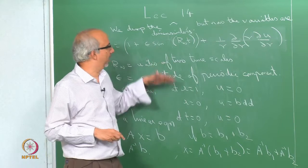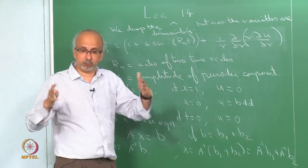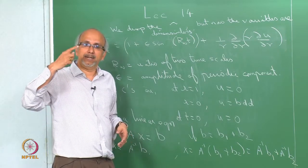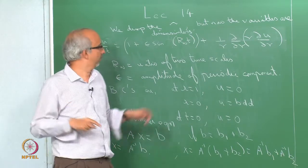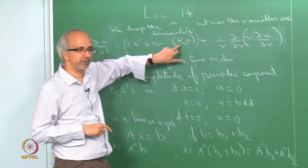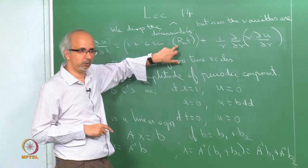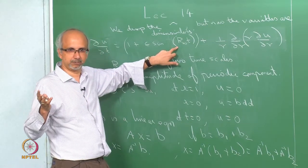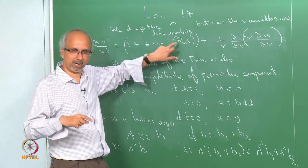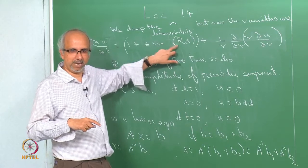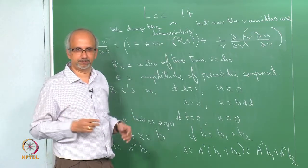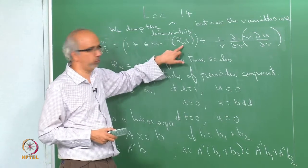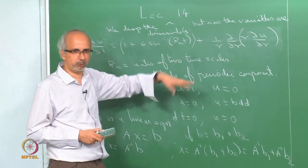The perturbation is going to be done about R_ω. Epsilon is just a magnitude. You could also do a power series about epsilon, but that is not what we are doing today. We seek u as U₀ + ε U₁ — this is not a perturbation series solution, it is simply writing the solution for two different sources of non-homogeneity.